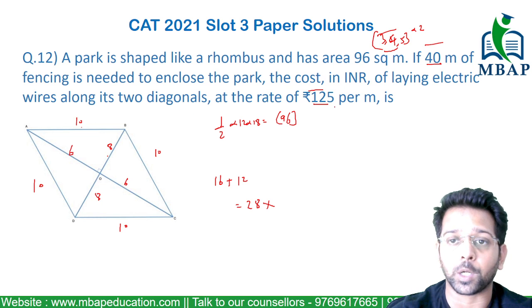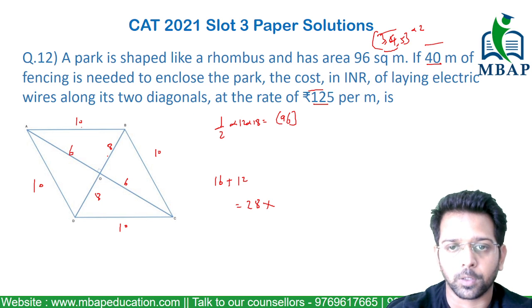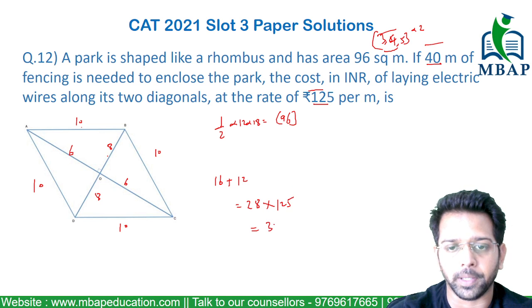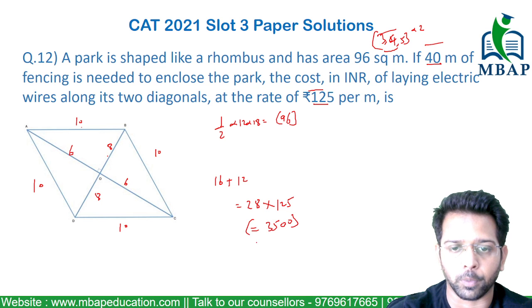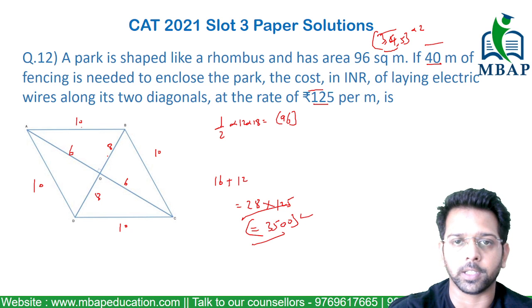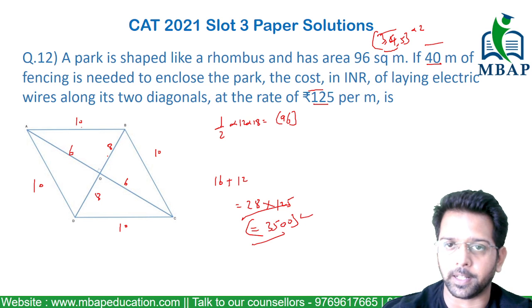The rate at which the electrical wires will be placed is 125 per meter. Total length is 28 meters, so the cost is 125 into 28, which comes out to 3500. It's a simple question — you can solve this. Thank you.